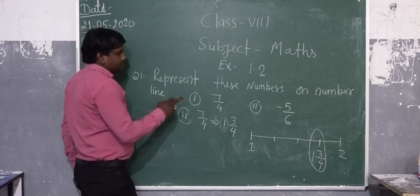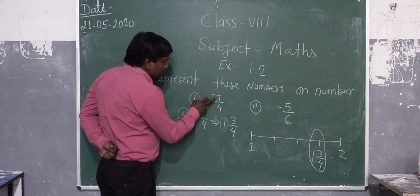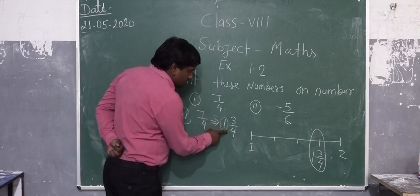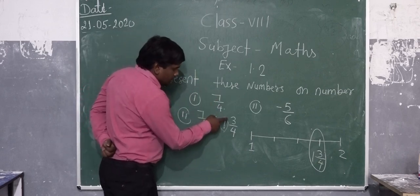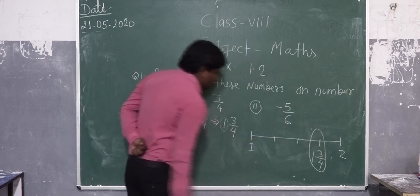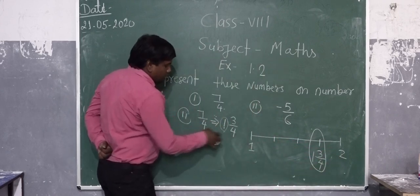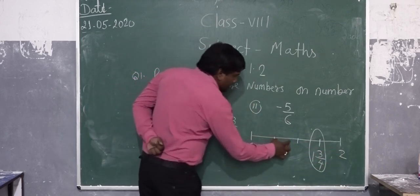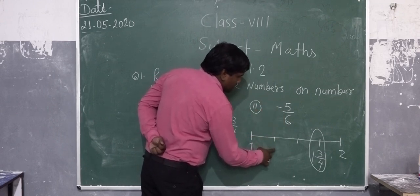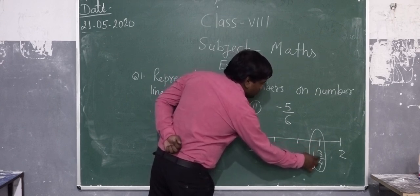First of all, we check the numerator and denominator. If the numerator is greater than the denominator, we change it into a mixed fraction. From the mixed fraction it is clear that this number lies between 1 and 2. Here 1 is on one side and 2 is on the other side. From the denominator, we divide this line into 4 equal parts. So this is 1 by 4, 2 by 4, this is 3 by 4. So this number becomes 1 and 3 by 4.